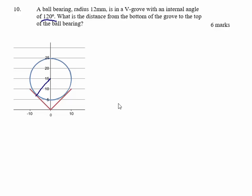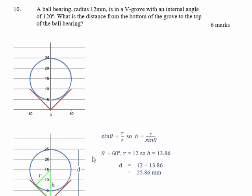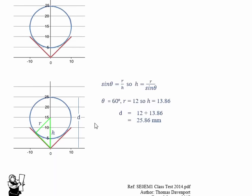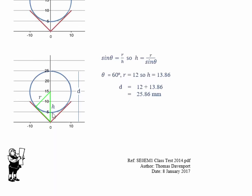Let's draw that a bit better. The angle of the V groove is 120 so the angle inside this triangle is 60.